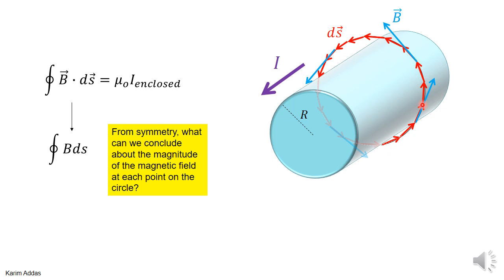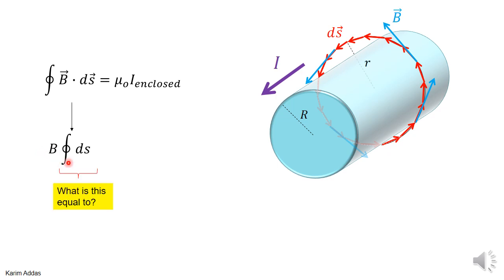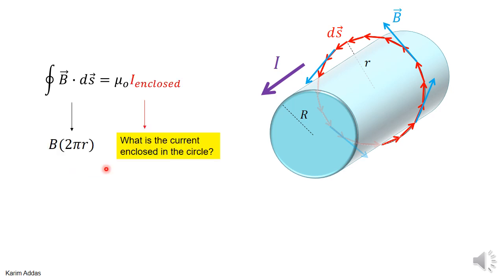From symmetry, even though we don't know the value of B yet, we know it must be the same everywhere on the circle — the setup looks identical at every point around the loop. So B is constant and can be taken outside the integral, leaving just the integral of ds. Integrating ds means adding all the small arc lengths around the circle, which gives the circumference 2πr.